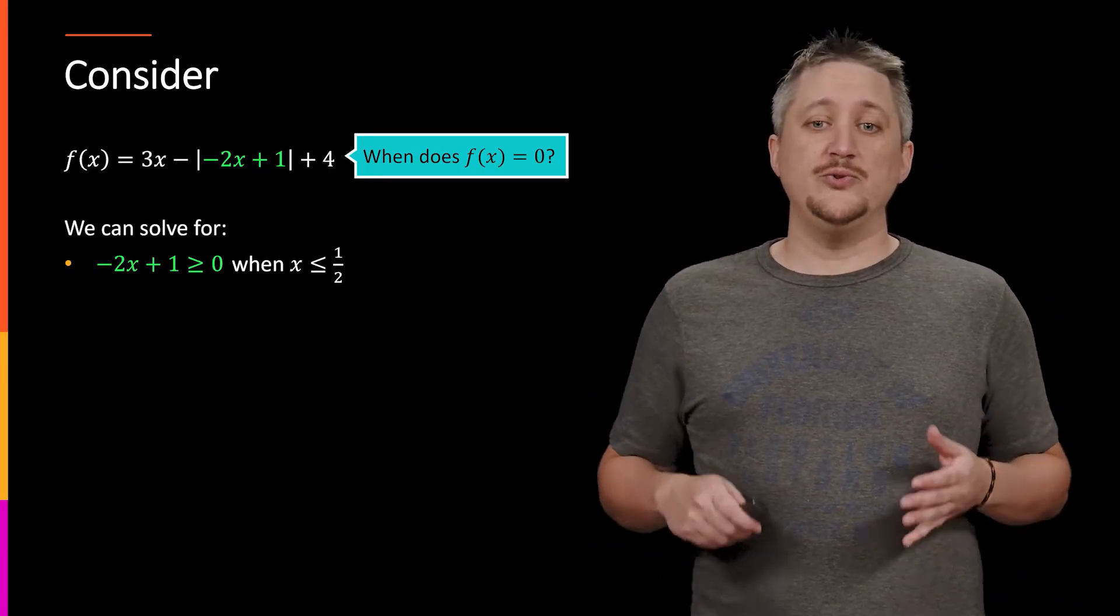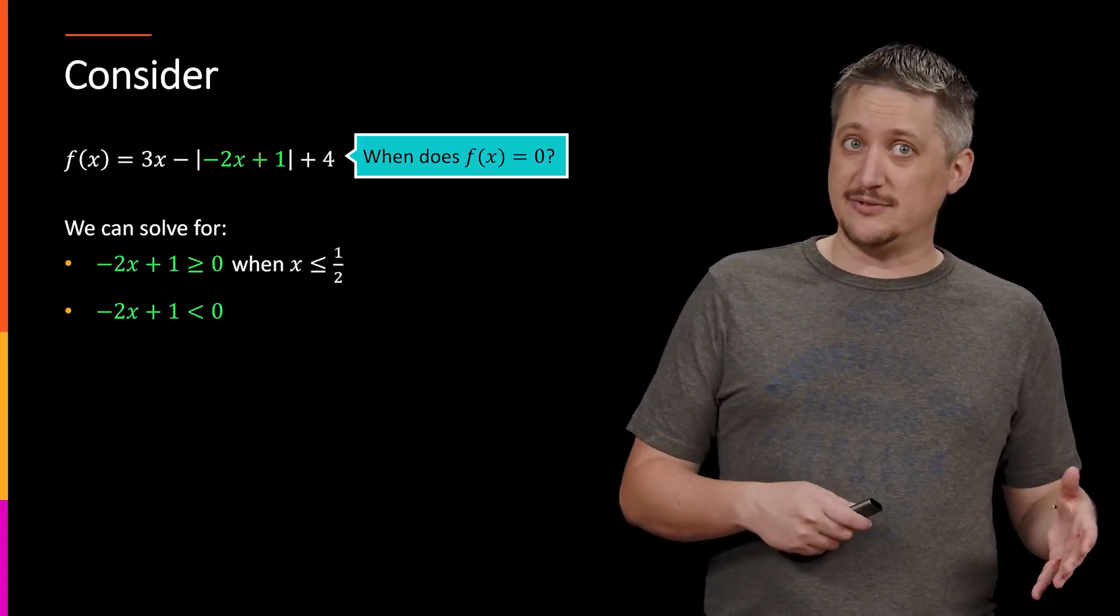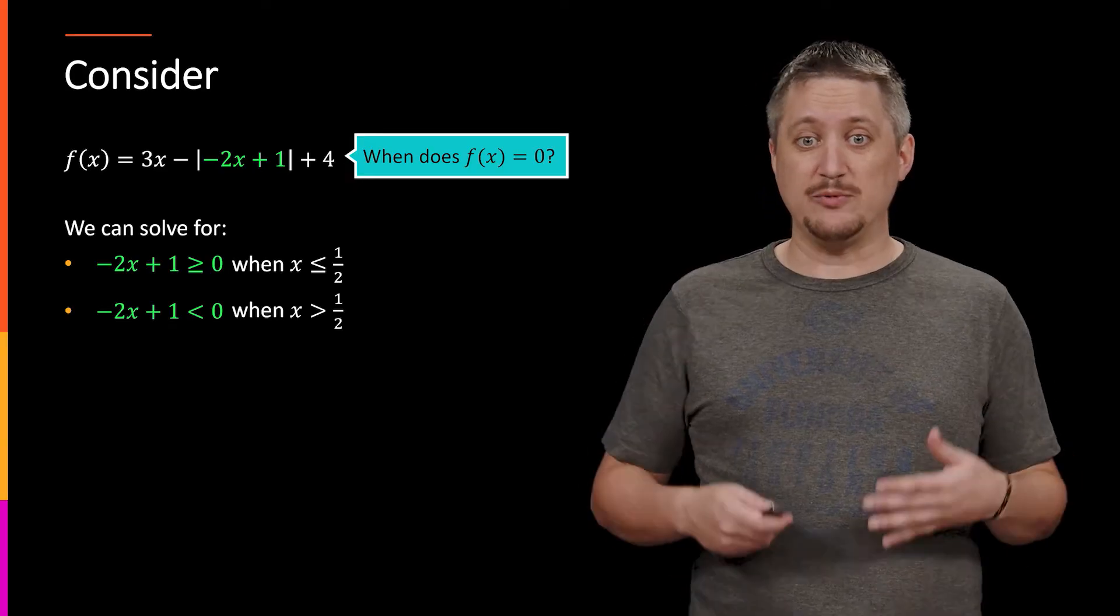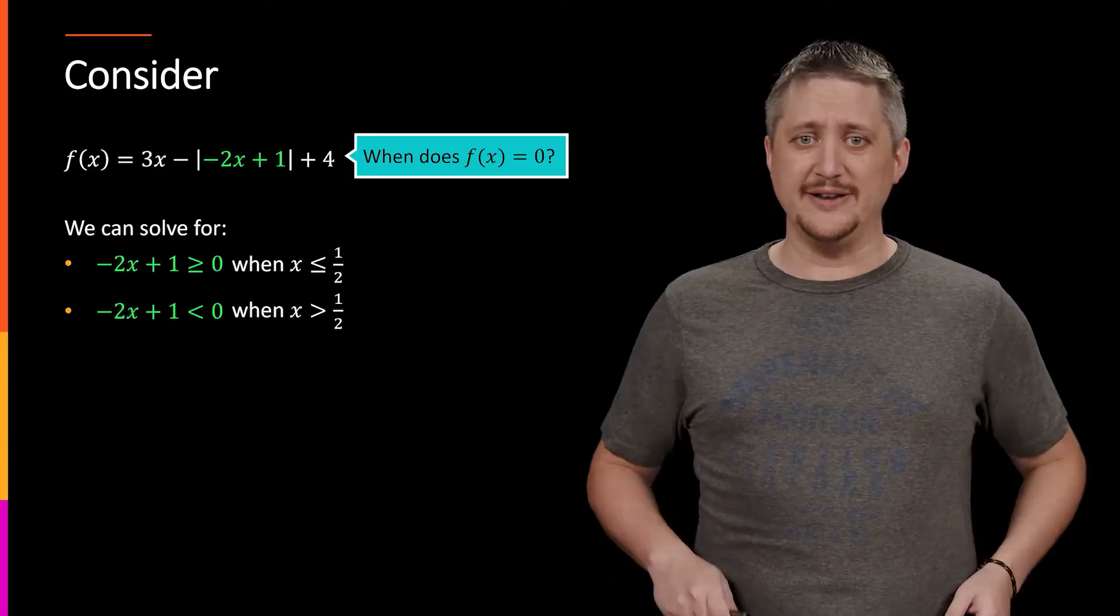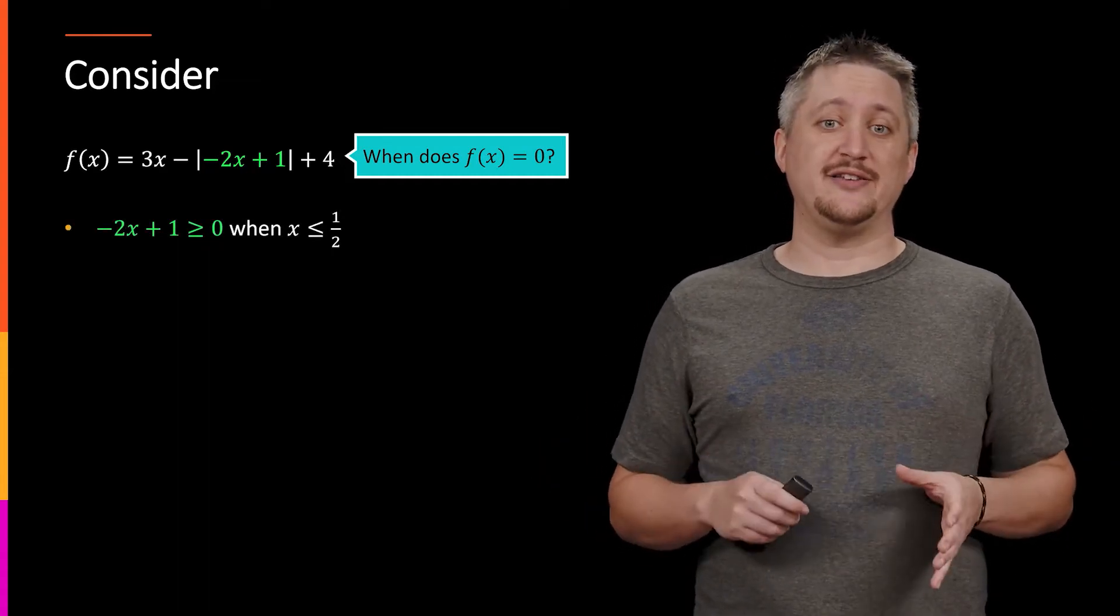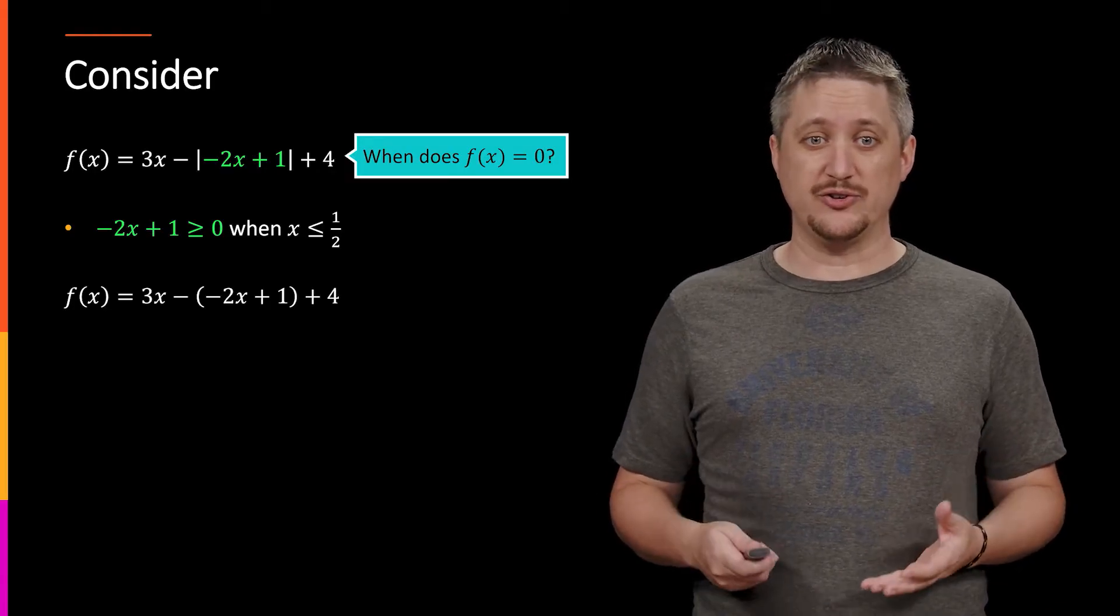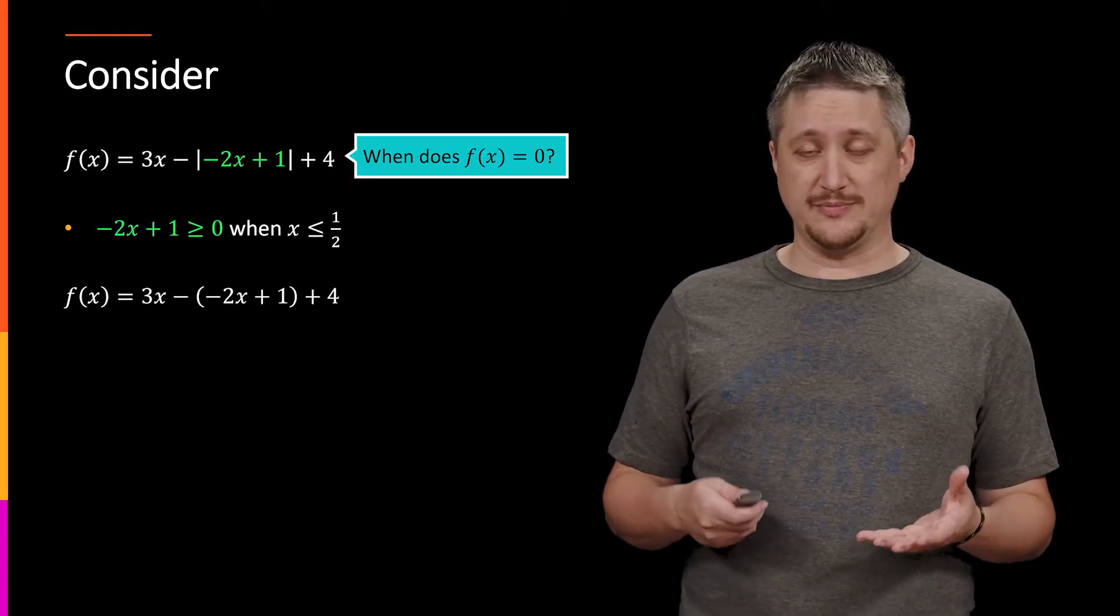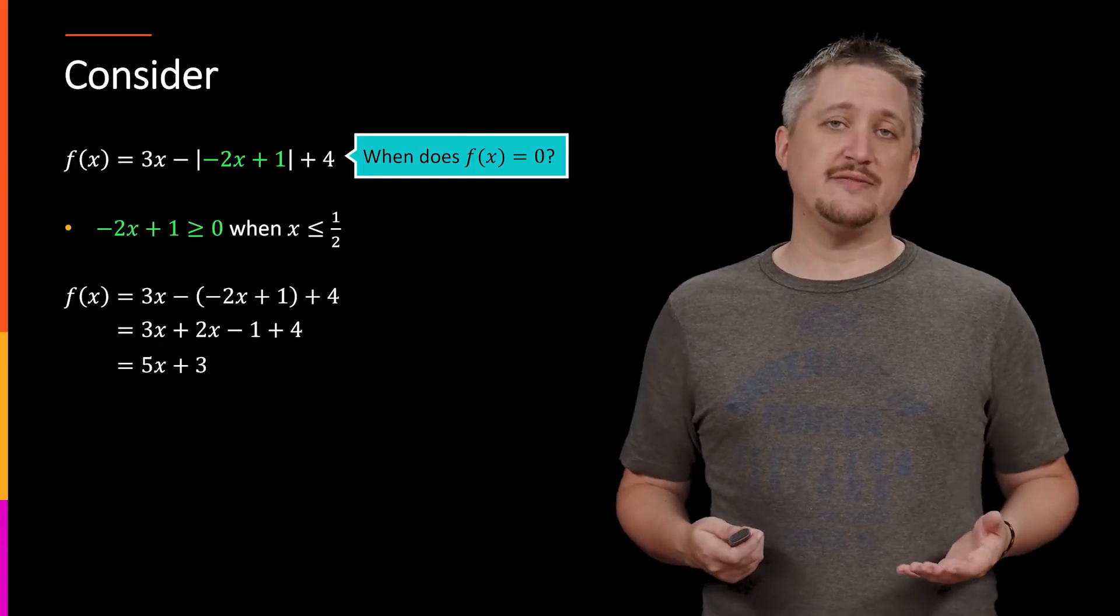Then, using that bit of information, we can say when is this thing negative? Well, we would solve it the same way, and we get it's negative when x is greater than 1/2. Now, looking at just the time when the inside is not negative, when the absolute value does nothing, what do we have as a function? Well, we replace it with parentheses, simplify it down, and eventually that gets us to 5x + 3.